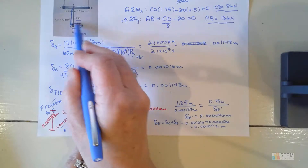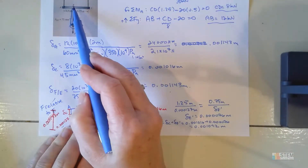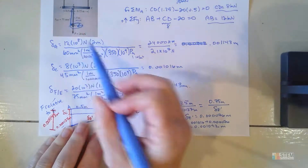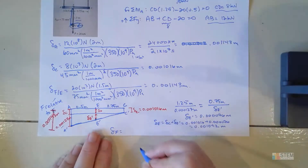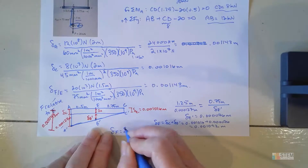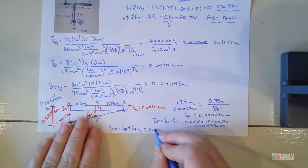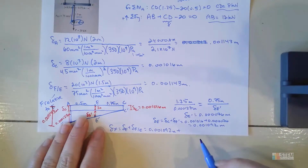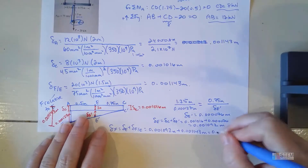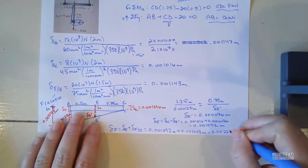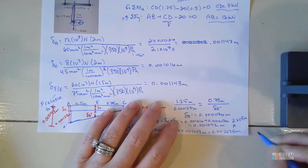Now I want the displacement of F, which is delta_E plus the displacement in rod EF: delta_F = delta_E + delta_(F/E) = 0.001092 + 0.001143 = 0.002235 meters. If you want that in millimeters, that's 2.235 millimeters. Either unit works — that's your displacement of point F.